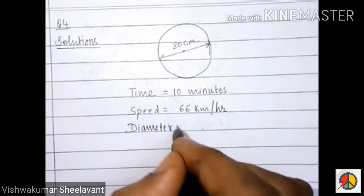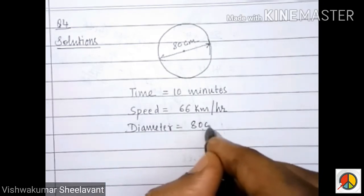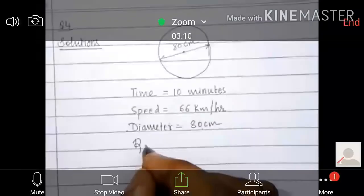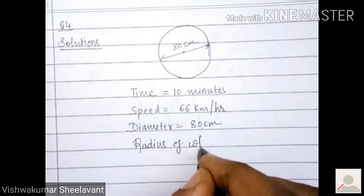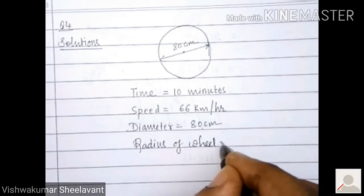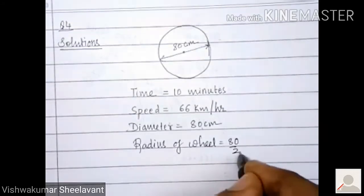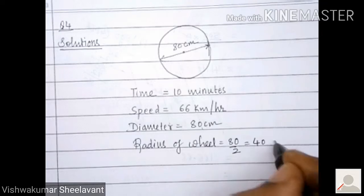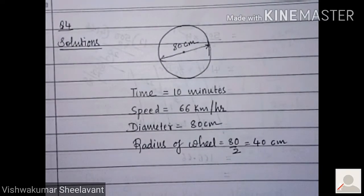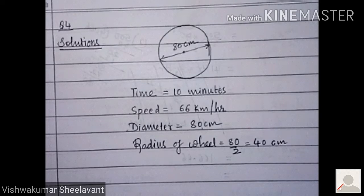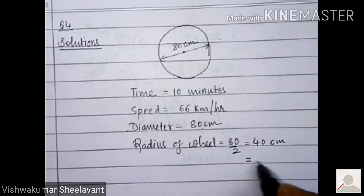Diameter is 80 cm. Radius of the wheel will be equal to 80 by 2, that is 40 cm. Convert that into meters - you will get 0.4 meters.